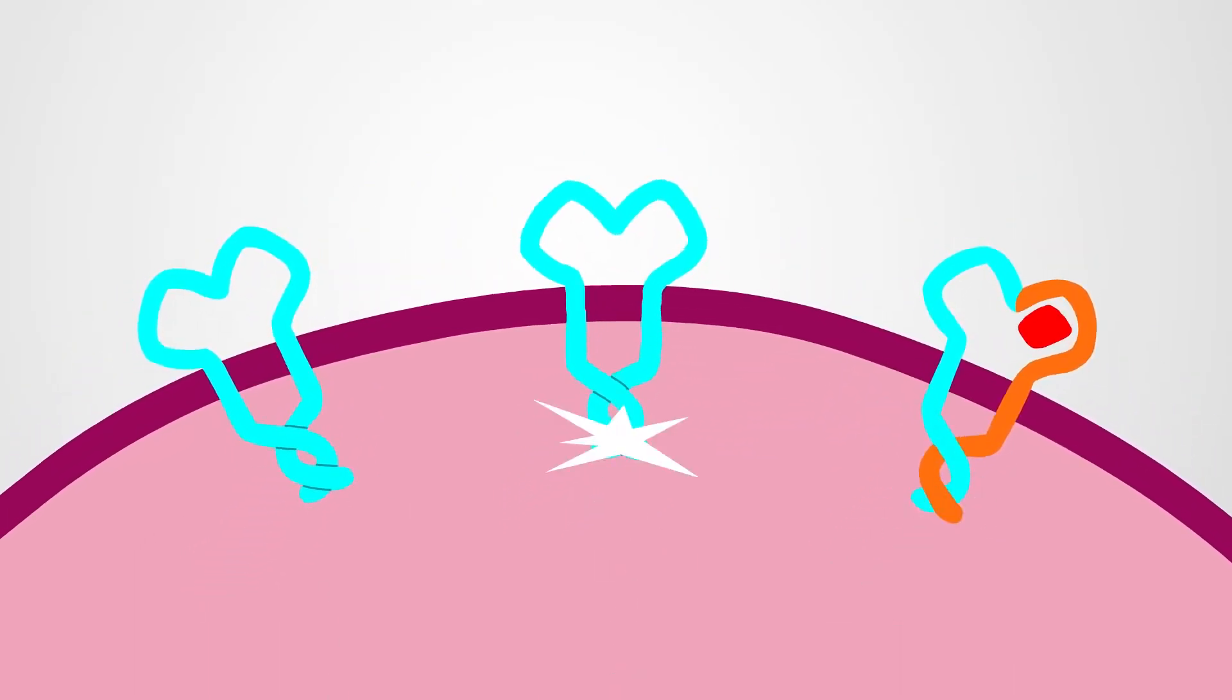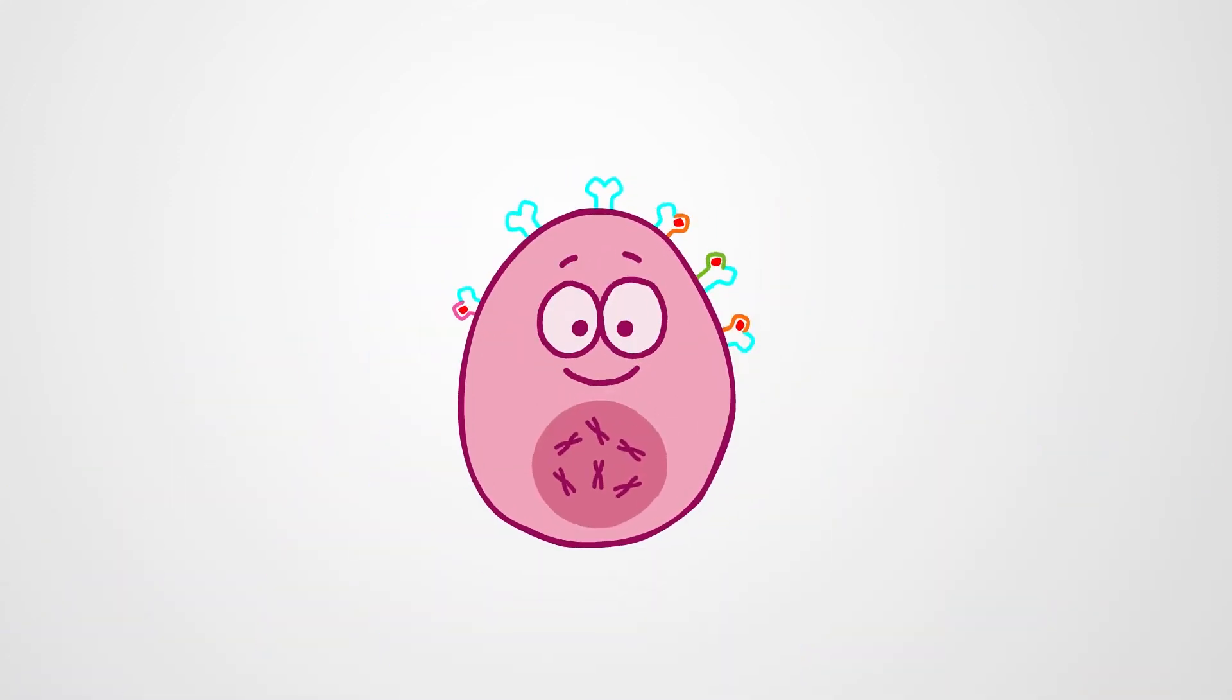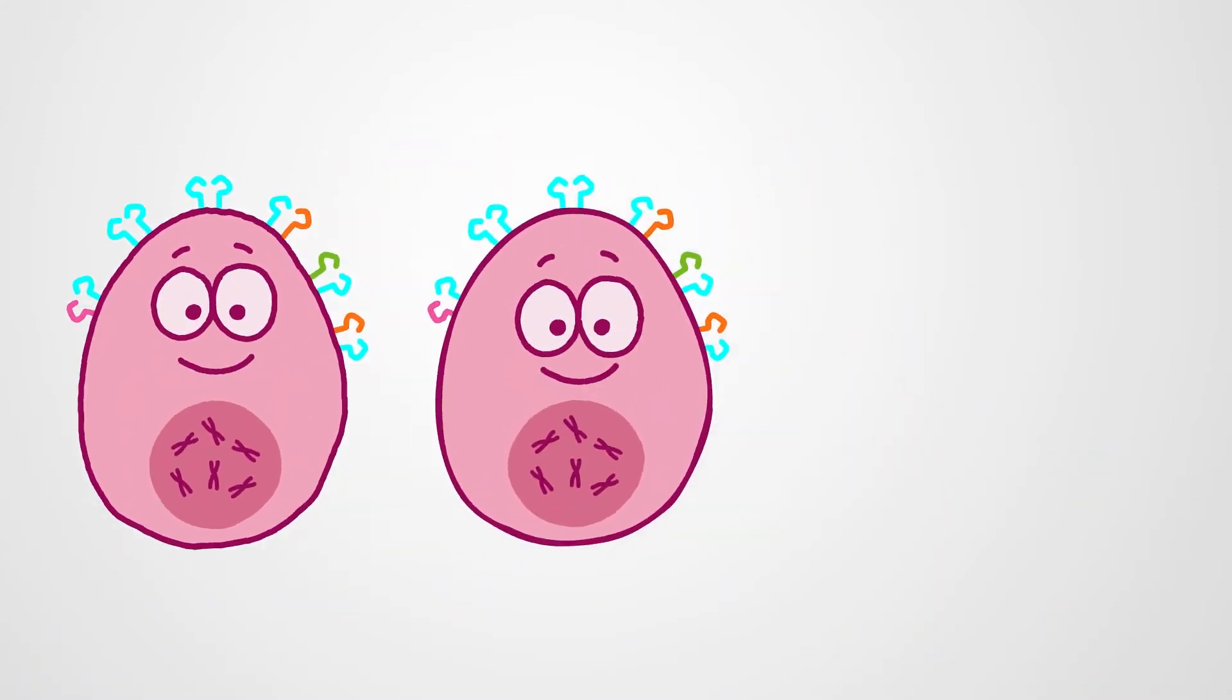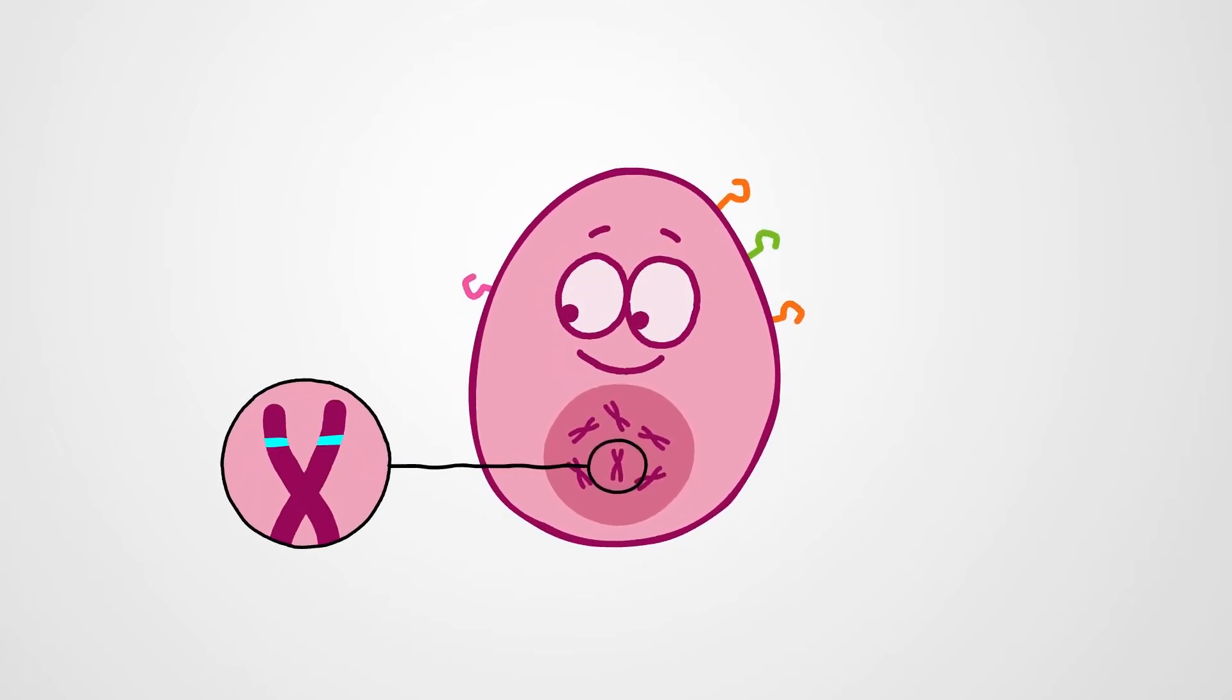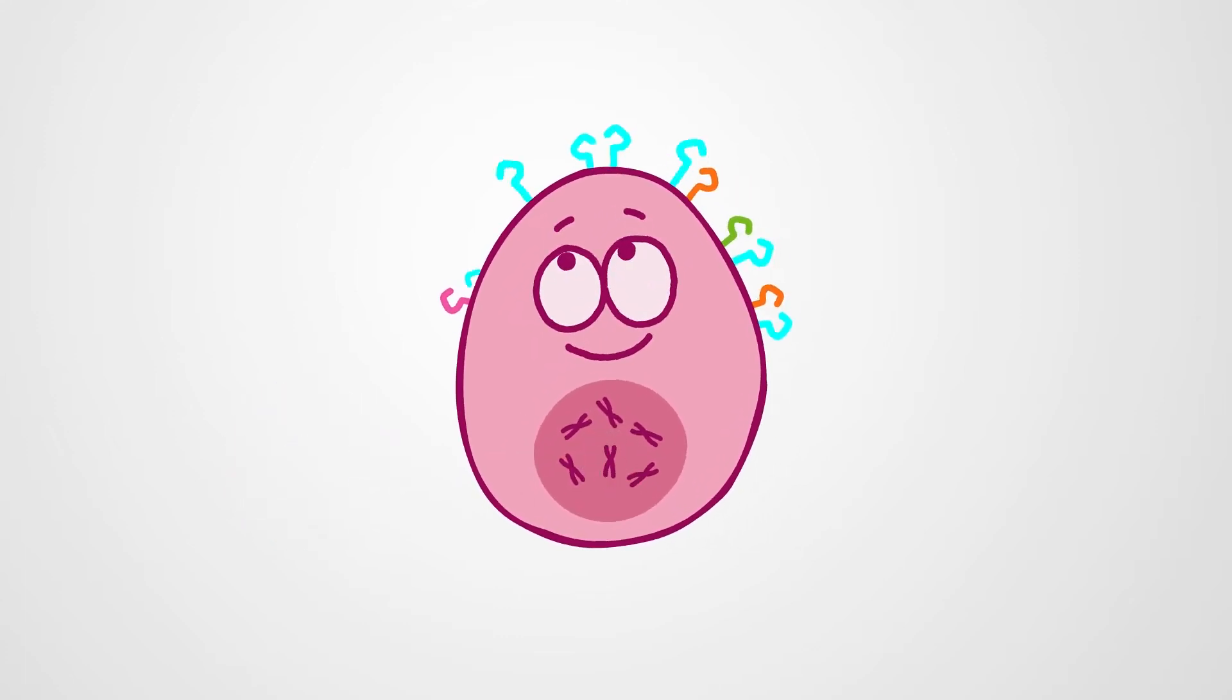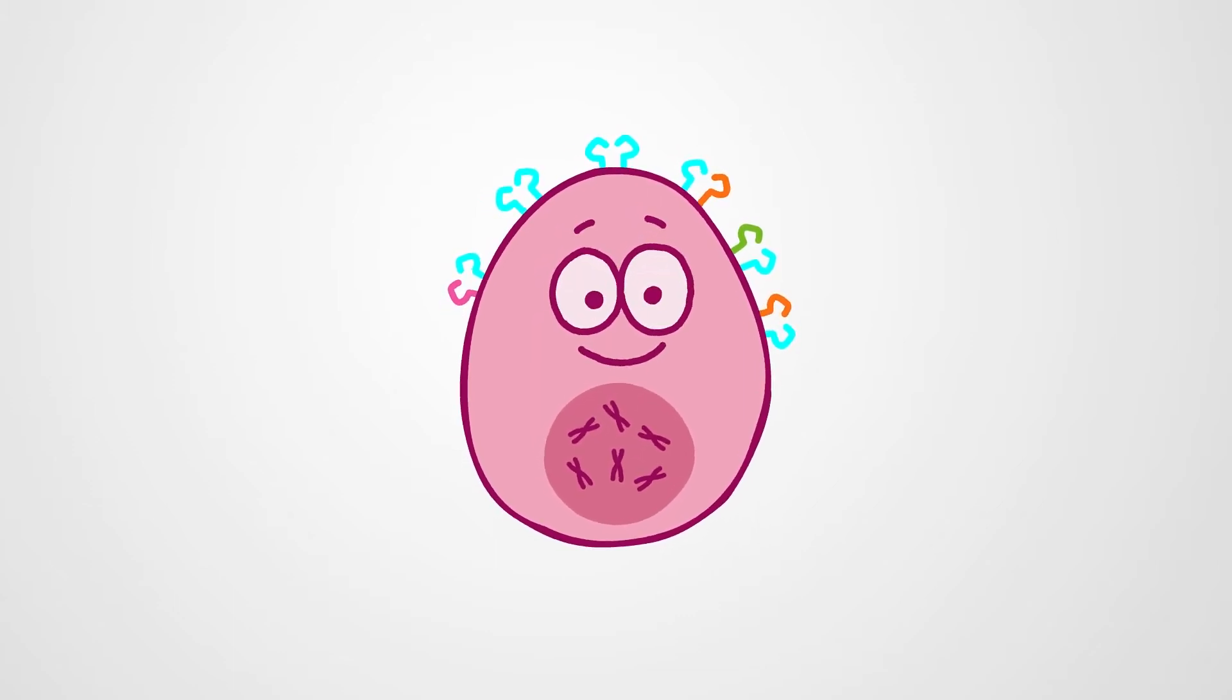When these receptors pair up, they generate a signal that can tell a cell to divide. In healthy cells, these signals are regulated. There are two copies of the HER2 gene, and they produce just the right number of HER2 receptors that the cell needs to function normally.